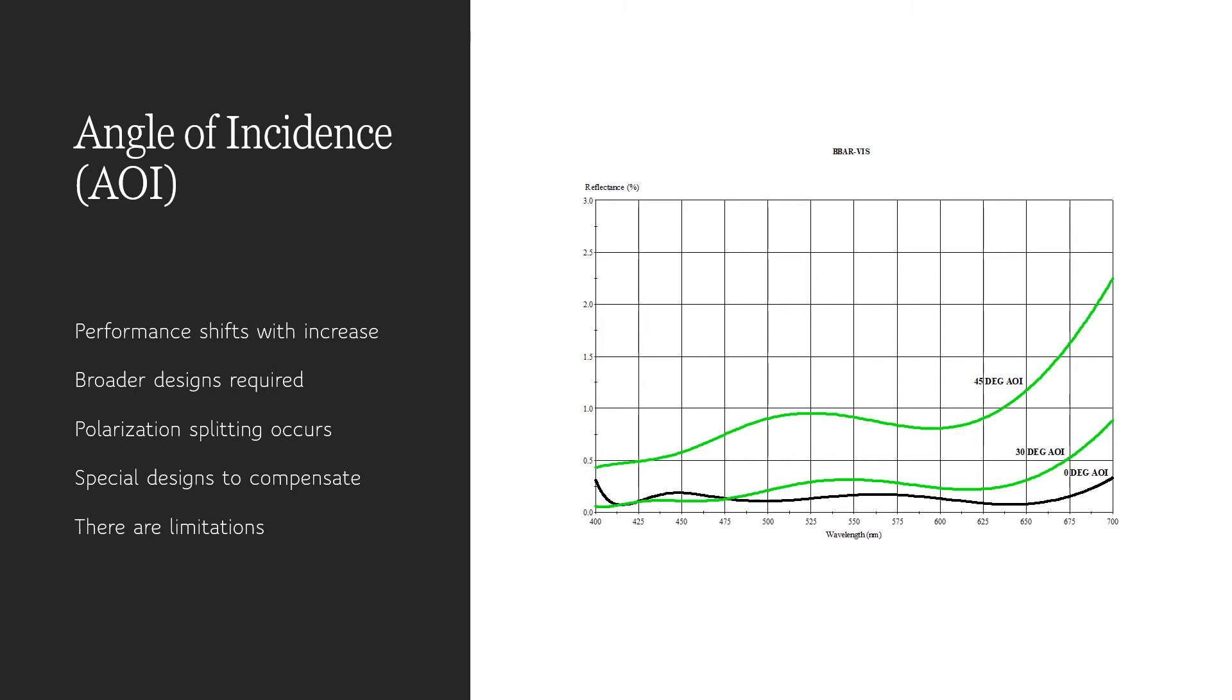Polarization is especially important as angle of incidence increases. The reflection of S and P polarizations separates as it is increased, and S pole will generally always have a higher reflectance than P pole. Special design and coating material considerations can be used that combat these challenges, but there are limitations.